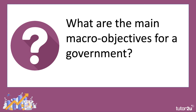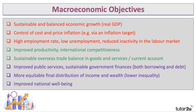What are the main macroeconomic objectives for a government? There are plenty and it's important to know a range of them. Here are eight listed on this slide. The first is sustainable and balanced growth of real GDP — governments want their economies to grow in a sustainable and balanced fashion. They also want to keep control of cost and price inflation, keeping prices relatively stable, perhaps with the aid of an official inflation target set for the central bank. Governments also want the labour market performing well, with high employment, low unemployment, and reduced inactivity.